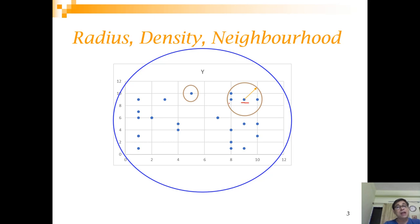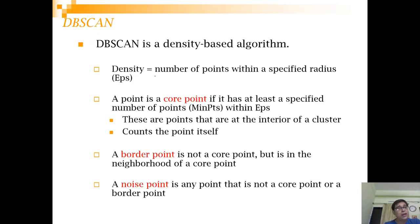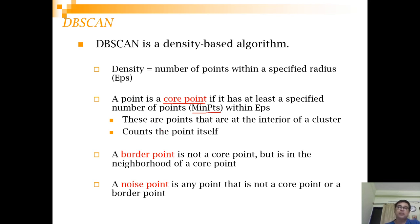Density is the number of points within a specified radius or epsilon. A point is a core point if it has at least a specified minimum number of points within epsilon — this minimum points value is the second parameter of the algorithm. The two parameters driving DB-Scan are epsilon and min_points. Core points are at the interior of a cluster, and the point itself is counted when computing min_points. A border point is not a core point but is in the neighborhood of a core point. A noise point is any point that is neither a core point nor a border point.